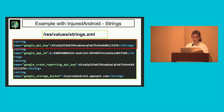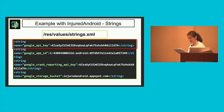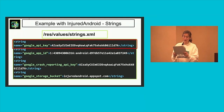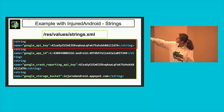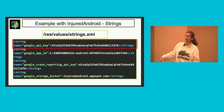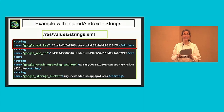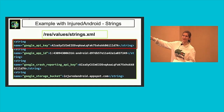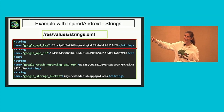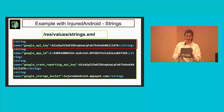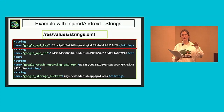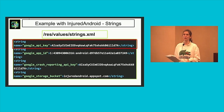Now we are going to check the strings.xml file from Injured Android. It's always useful to check this file. The location is res/values/strings.xml. In our example, we have a goodie — there is an API key here, and you should not have this here. It's bad practice. It should be stored securely outside of the app. You definitely have to put this in your report.